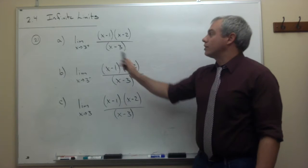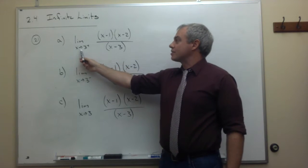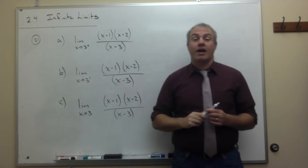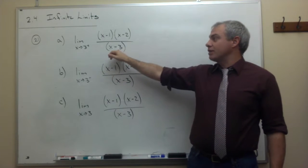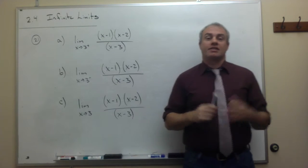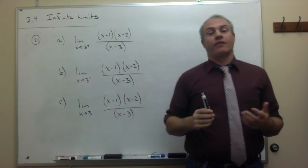So, first thing we look at is x is going to 3 from the right. If we plug in the value 3 for x, we do get division by 0. So, something needs to be done here, and we need to determine is this a hole in the graph or is this a vertical asymptote.